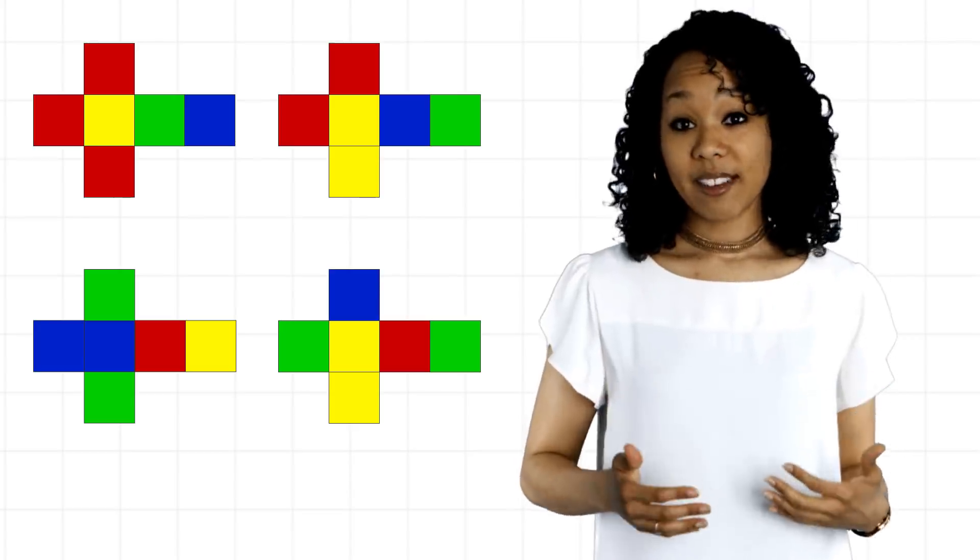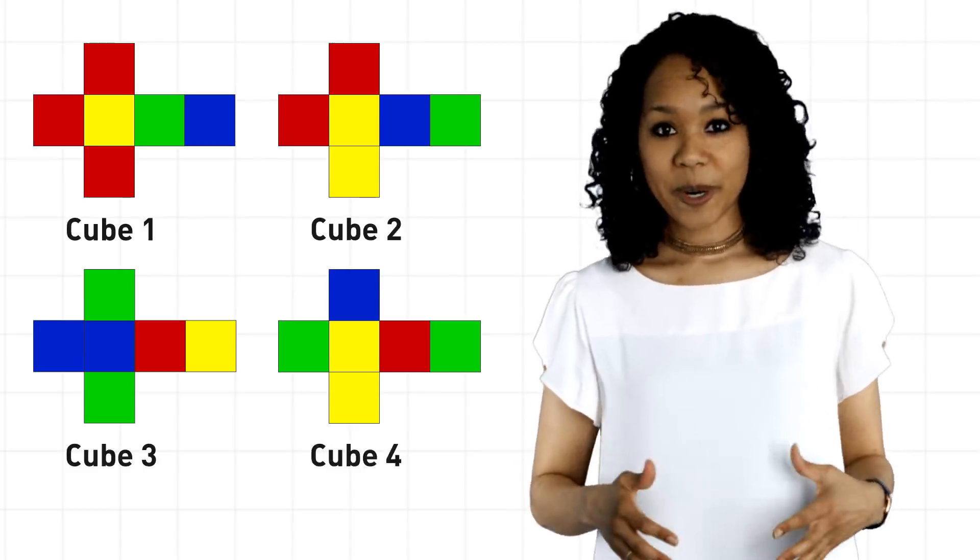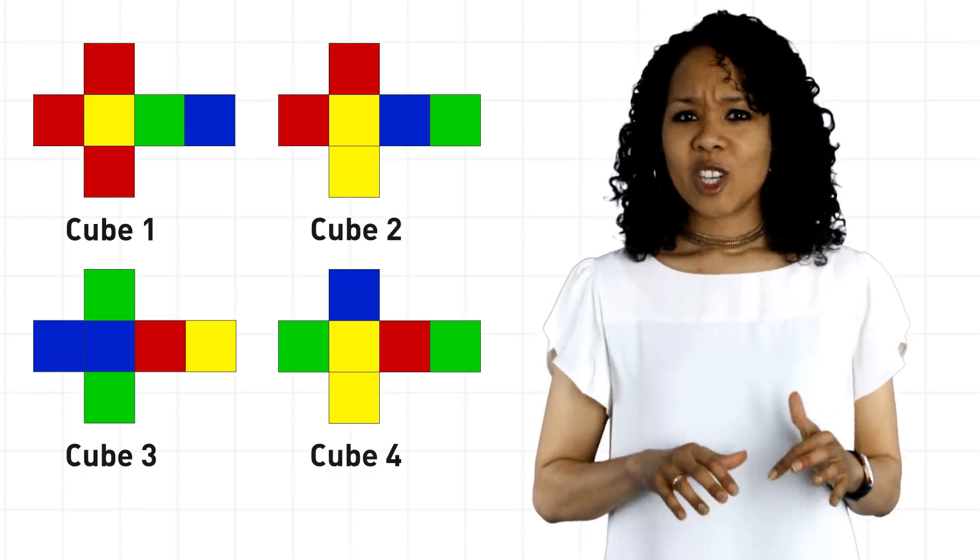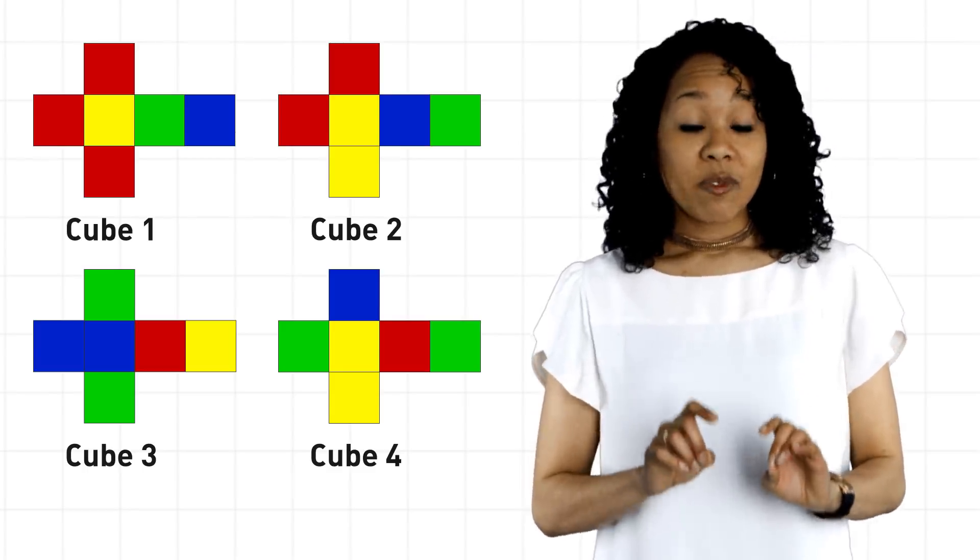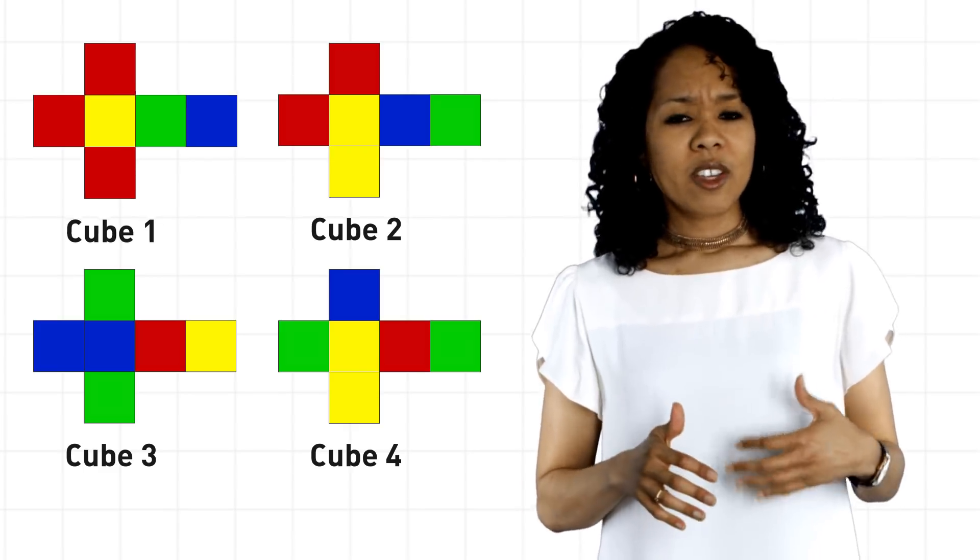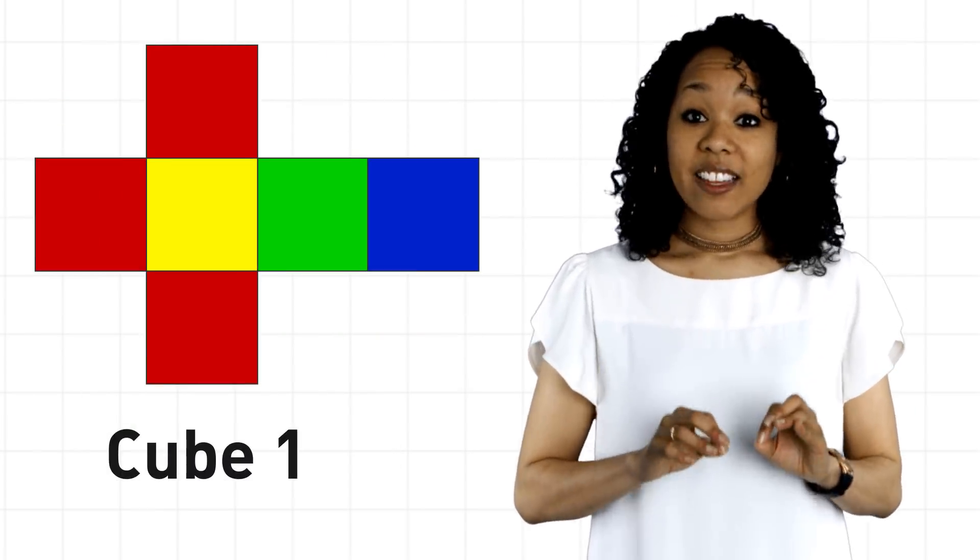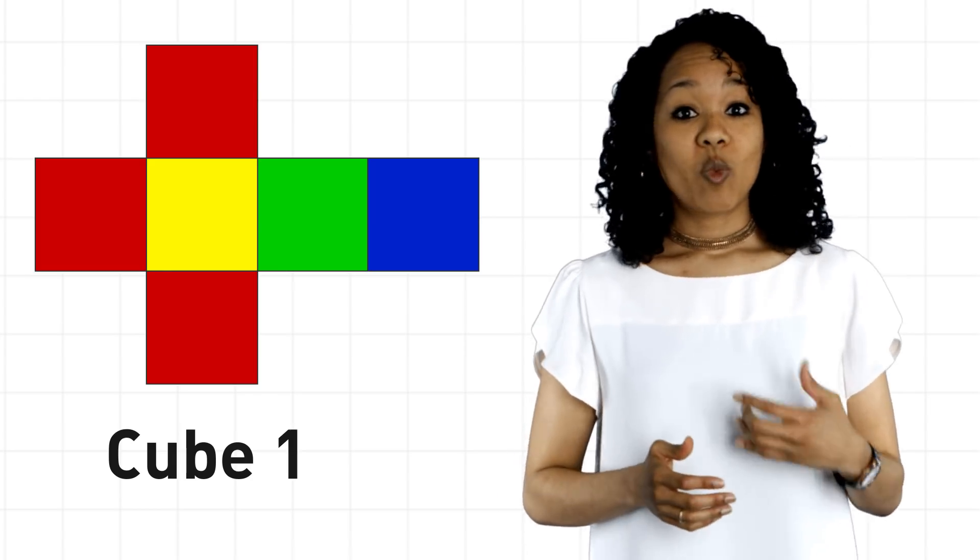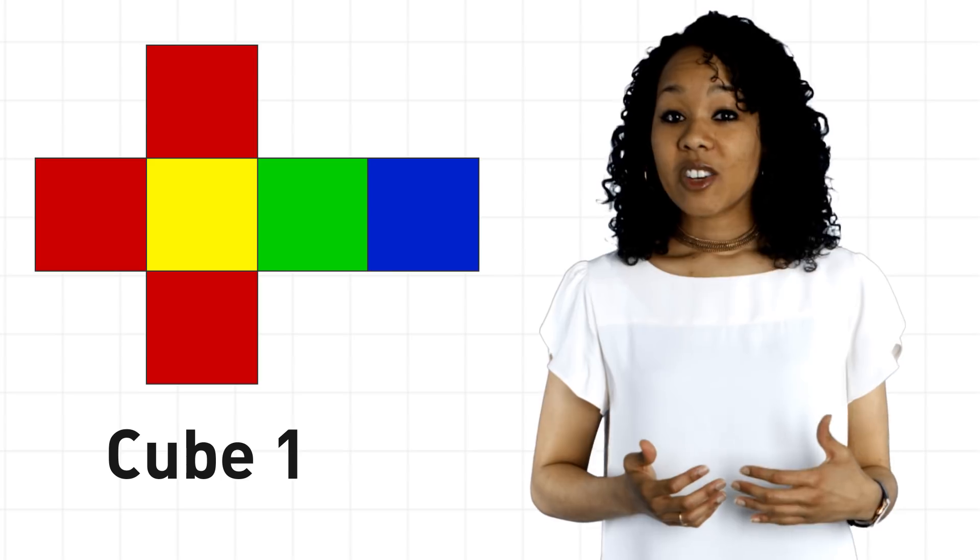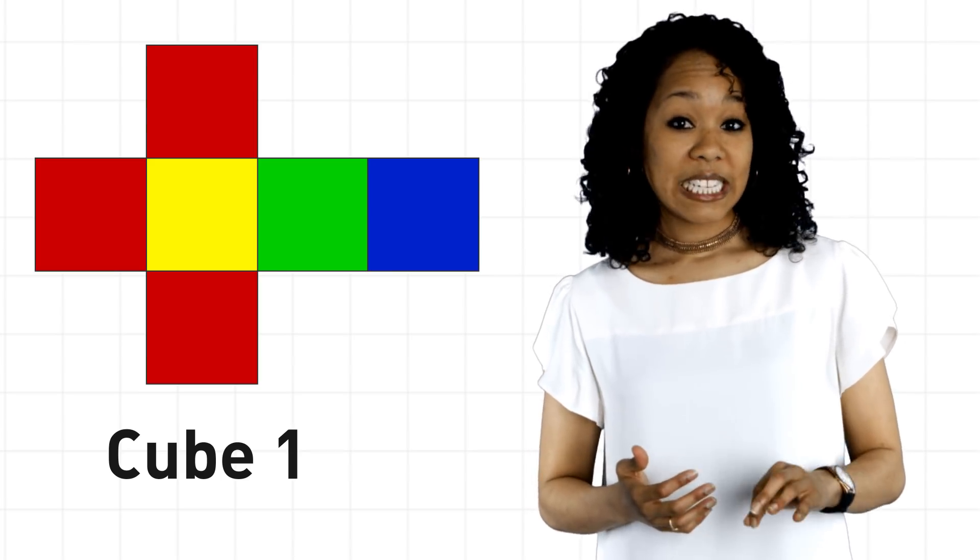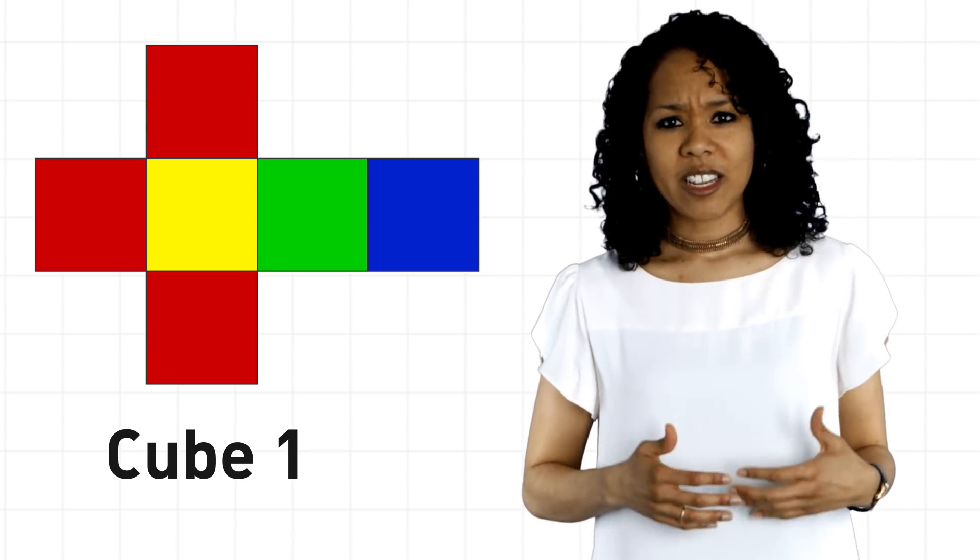Here are the four cubes again labeled 1, 2, 3, and 4. Now the coloring on these cubes is very important. In other words, we're only considering these four particular cubes. So for example, cube number one has exactly three red faces and one yellow, green, and blue face. Moreover, those colors appear on the particular faces as indicated and similarly for the other cubes.